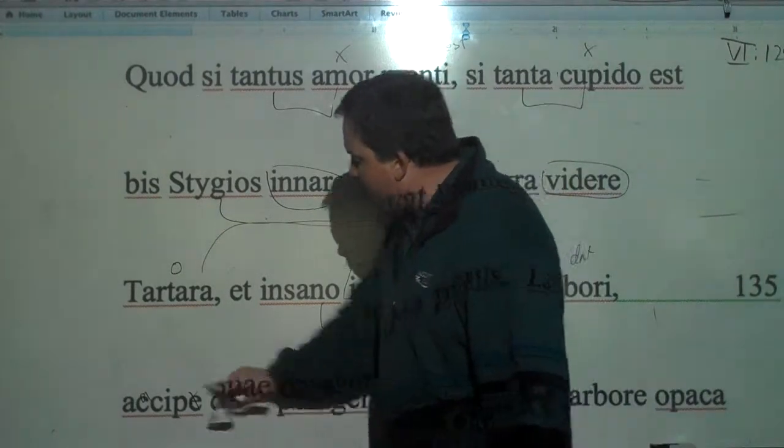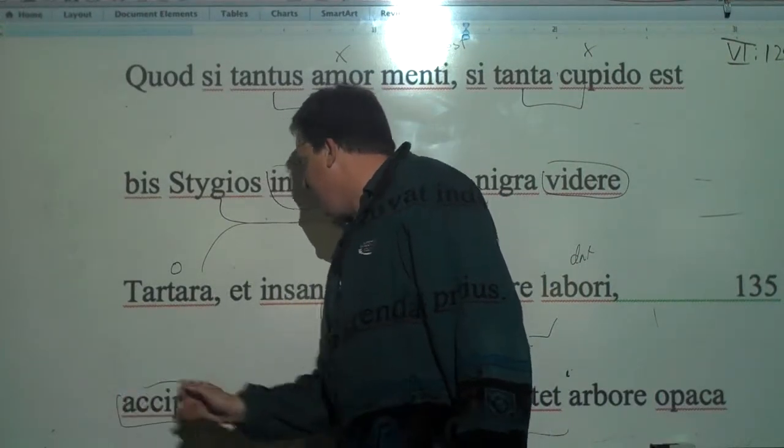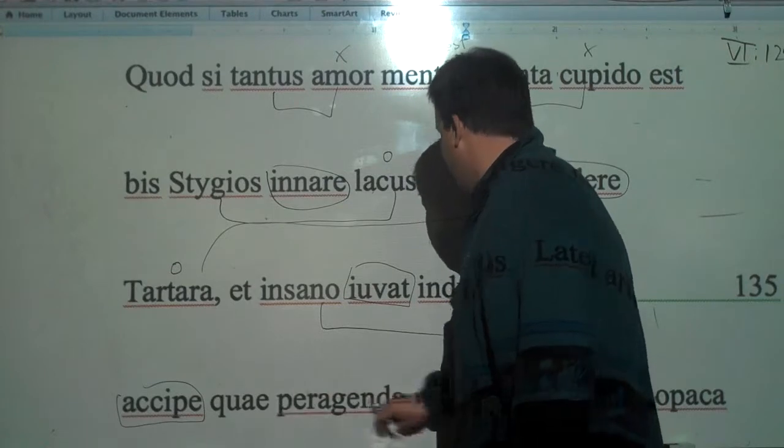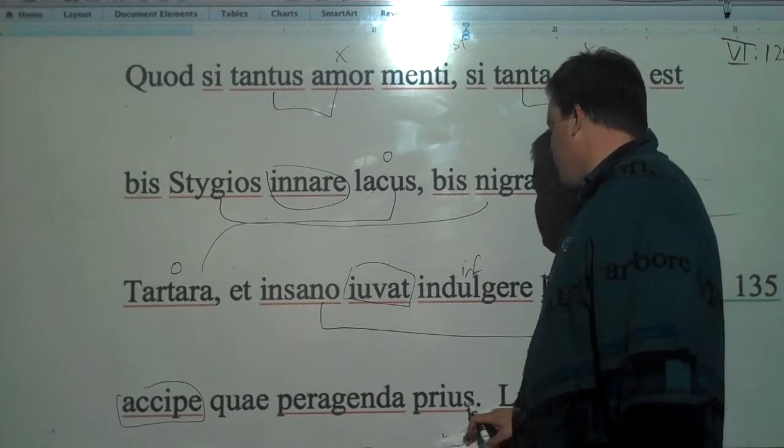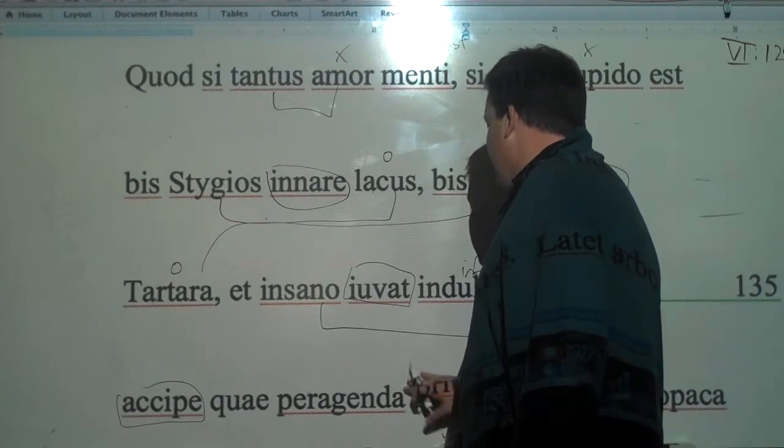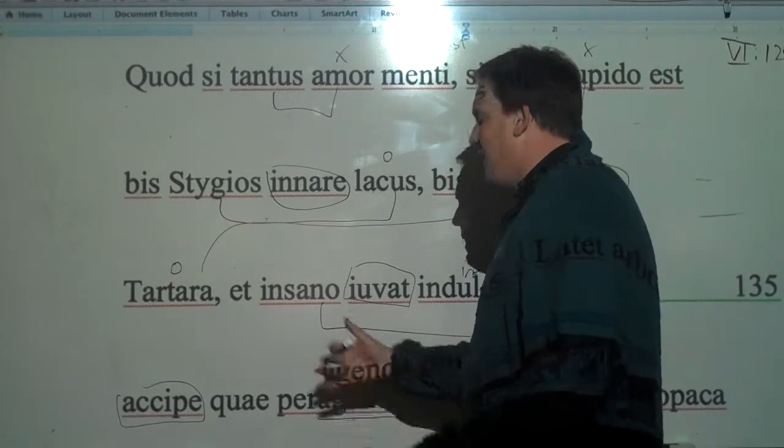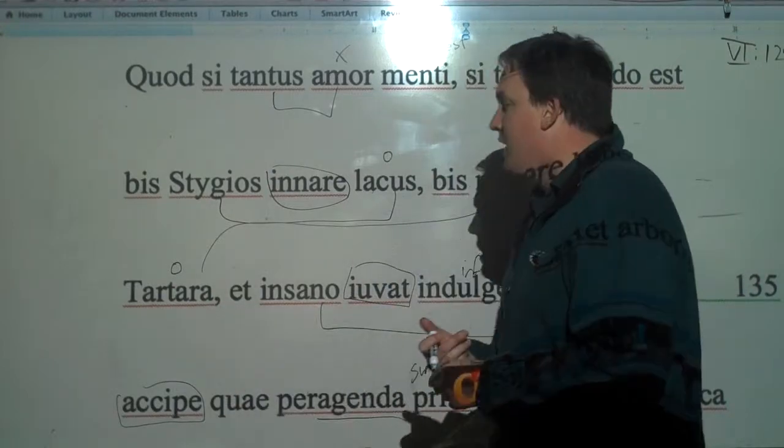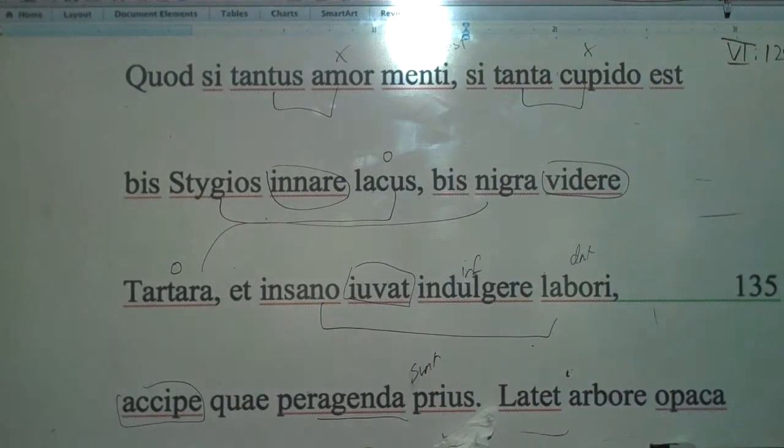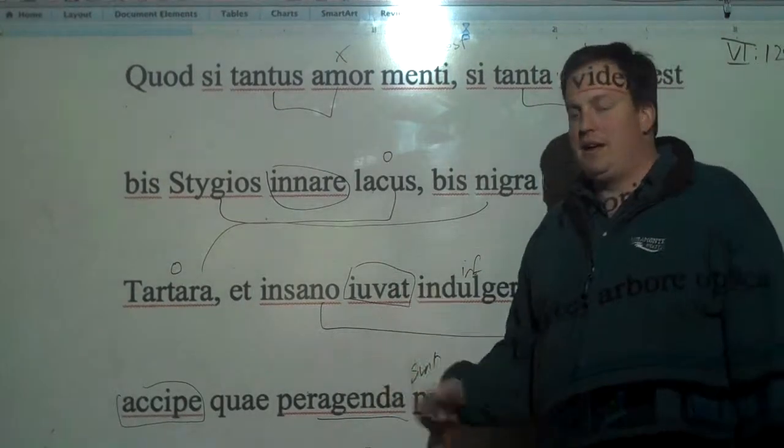Accipe - receive, or I can all just mean here, and it's the imperative - hear what first, primus, peragenda sunt. Hear what first must be agenda. Peragenda is giving more emphasis to it. What first must be done. And then we're going to talk about the golden bough, which is very famous.